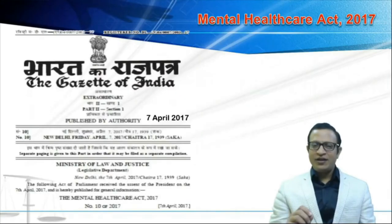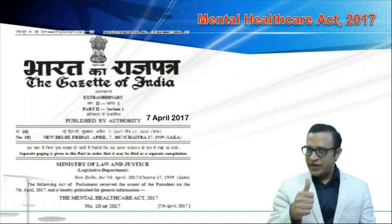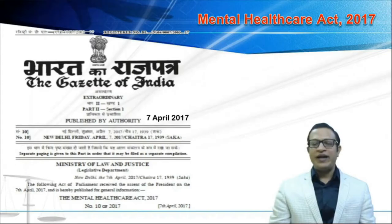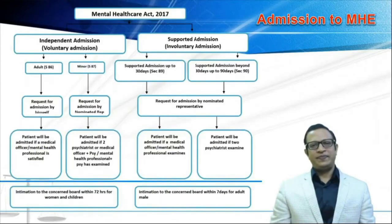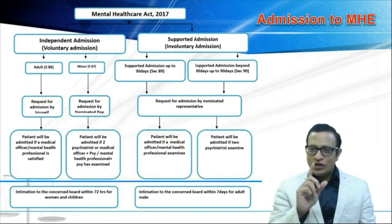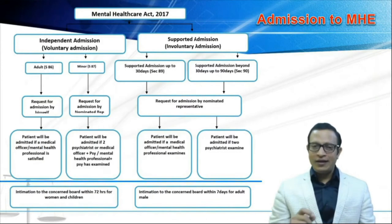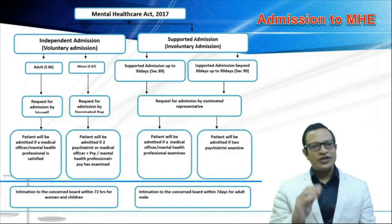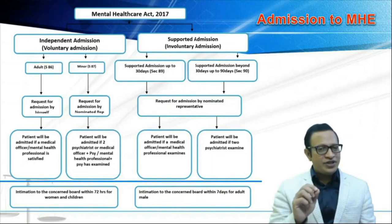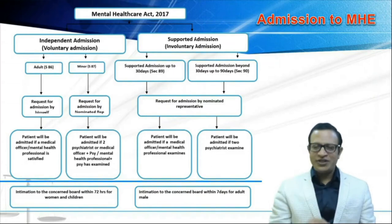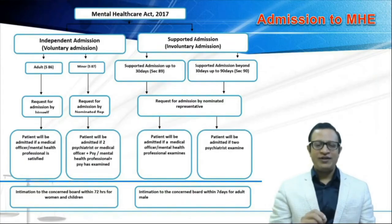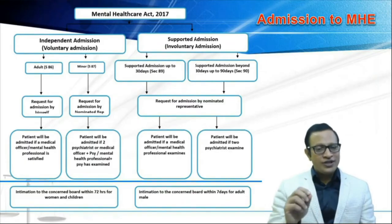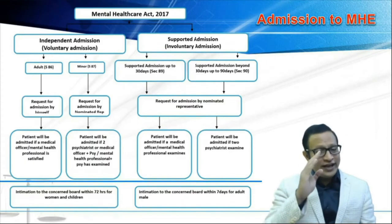This presentation is from the Mental Health Care Act of 2017. I am discussing independent admission and admission of a minor. There are two types of admission under Mental Health Care Act: one is independent admission and another one is supported admission. Independent admission is nothing but voluntary admission, and supported admission is nothing but involuntary admission. In this video, we are going to discuss only independent admission.